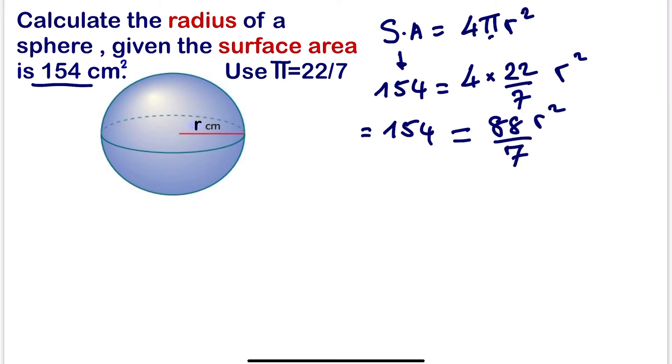Next, we have fraction. So to eliminate the fraction, we can cross multiply. So we can write this over 1 because 154 divided by 1 is still 154. Then we can cross multiply.